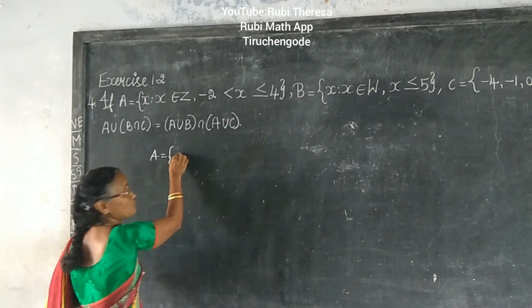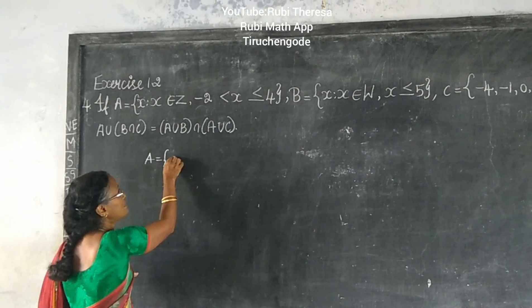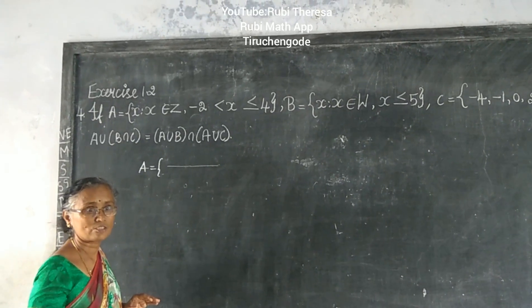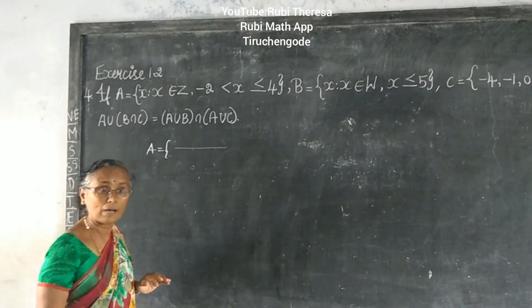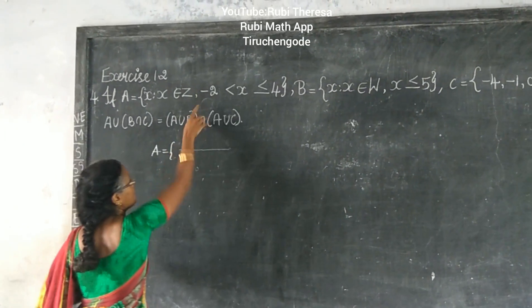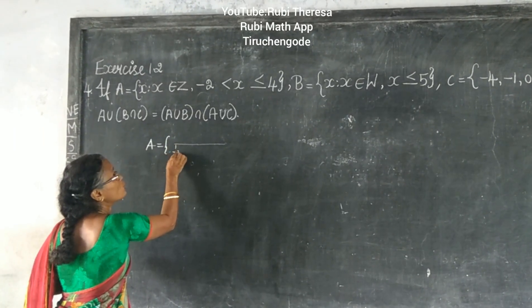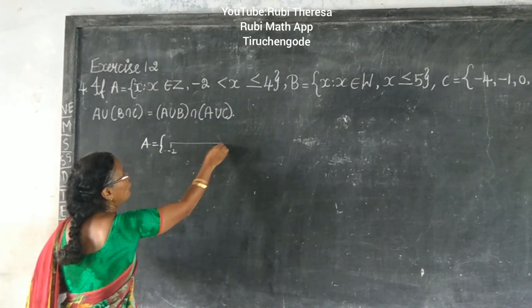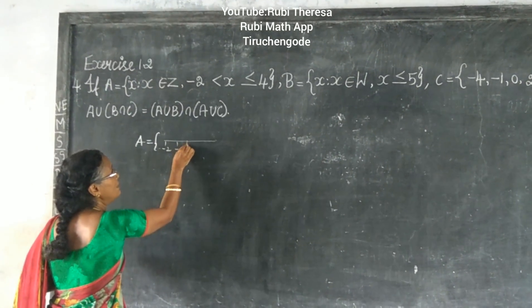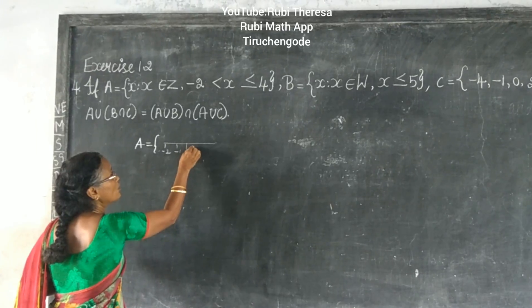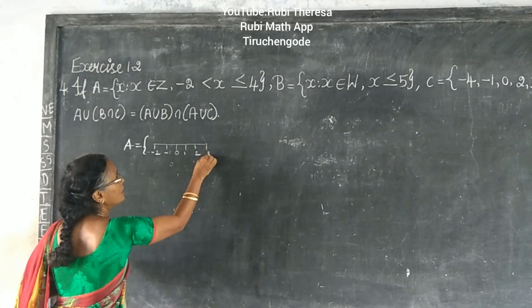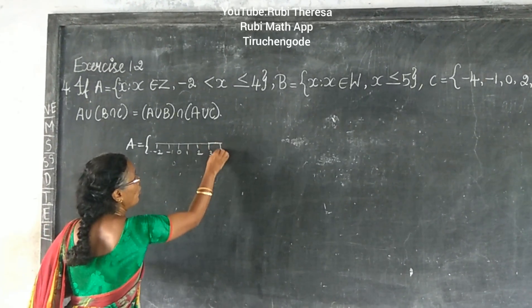For real numbers, draw a number line. So from which number? Minus 2 to 4. So: minus 1, 0, 1, 2, 3, 4.